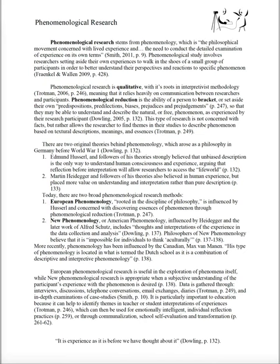Husserl's work and followers later evolved into what is called European phenomenology, which is useful in exploring phenomena itself, and Heidegger's work was eventually adapted to become new phenomenology, sometimes called American, which is more focused on understanding the participants' interactions with the phenomena. The main difference is that in the new style, some biases, such as culture, are accepted as factors in understanding experiences, because researchers here believe that it is impossible to completely remove your mind from these learned roles.